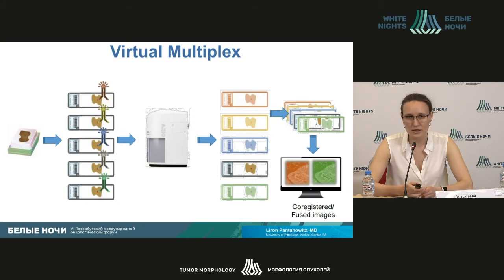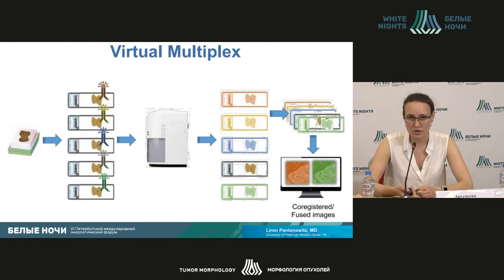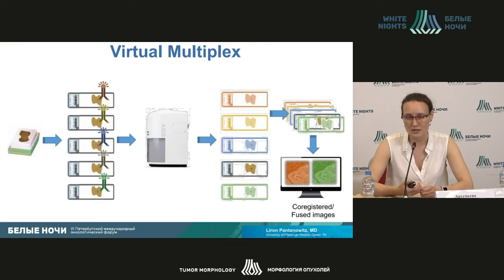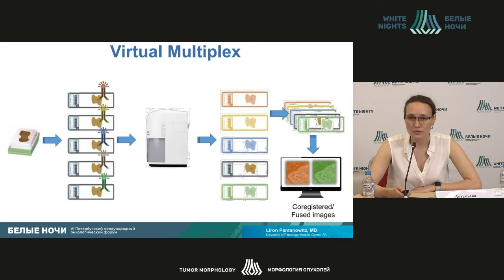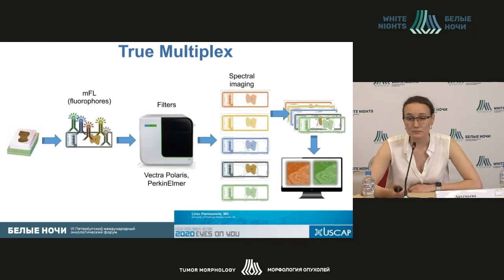Virtual multiplex can be implemented under different masses — it's a very interesting methodology. Serial slices from one block are stained by different dyes and fluorescent markers. If there are more than two stains, it's better to use fluorescent dyes. Then all those stains are scanned, and there is program software overlapping of slices, and we get a summed-up image based on different tracers and marks which are there in the slides.